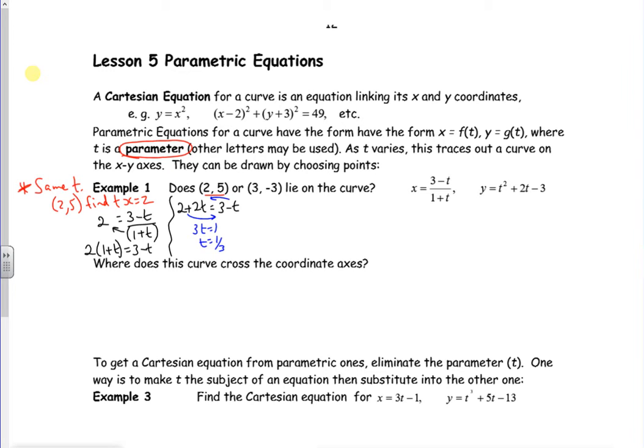Now then, if the point (2, 5) lies on that line, on that curve, then if I put t is 3 into y... sorry, t is a third into y, then that should give me 5. So let's have a look.